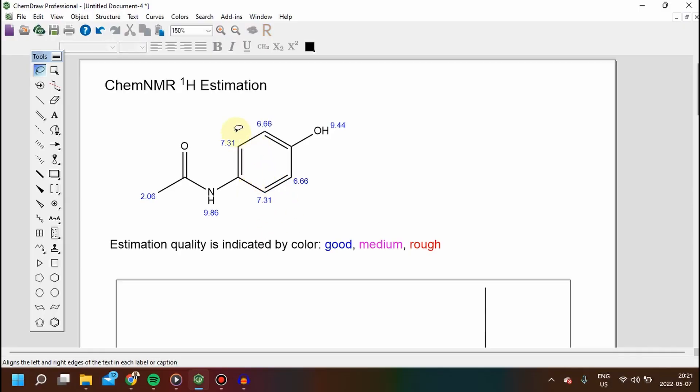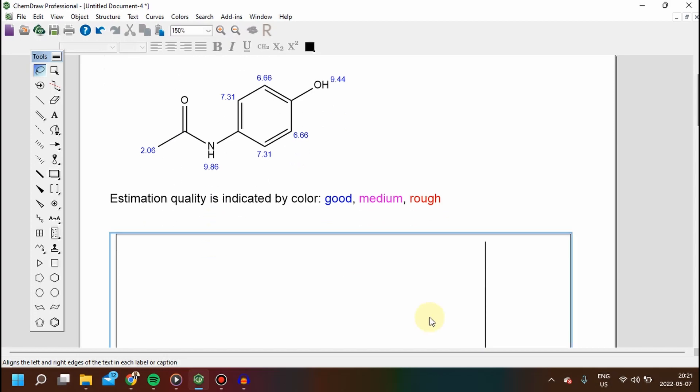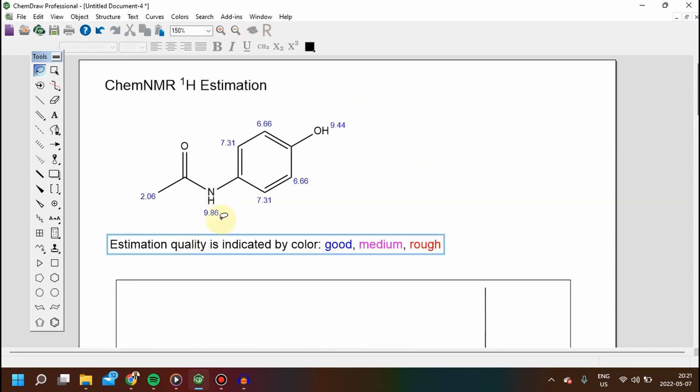From this side of the substituent, we have a methyl carbon bonded to a carbonyl carbon. The methyl protons are highly deshielded because the methyl carbon is connected to a carbonyl carbon which constantly draws electrons from this environment.